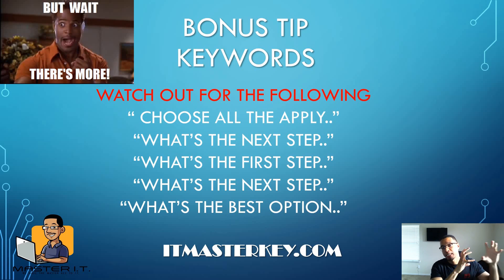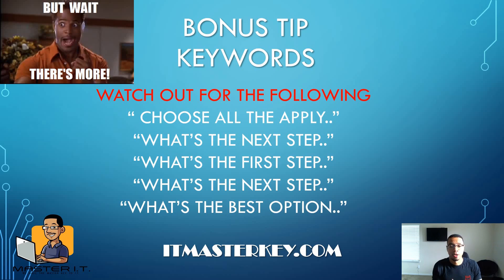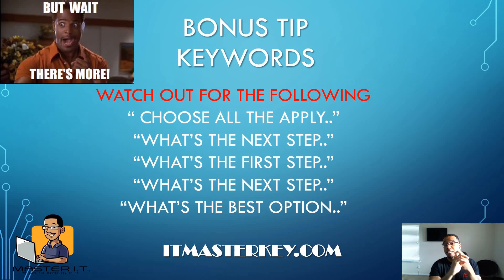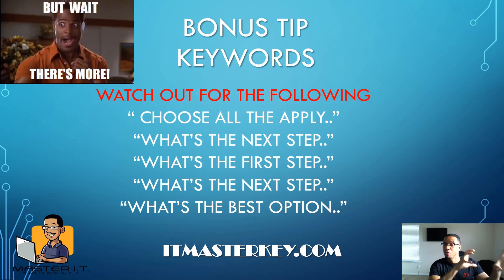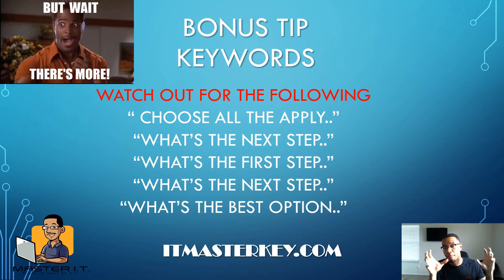Look at what the person in the scenario has already done and ask: what's the very next step they should take? What's the first textbook step? Is it powering the machine off? Is it taking off your jewelry? And finally: what's the best option for the individual in that scenario?